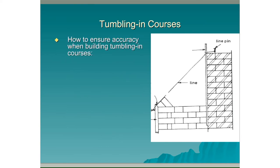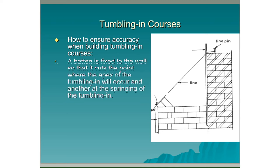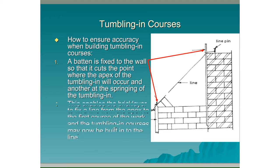How to ensure accuracy when building tumbling in courses: A batten is fixed to the wall so that it cuts the point where the apex of the tumbling in will occur and another at the springing of the tumbling in. This enables the brick layer to fix a line from the apex to the first course of the wall and the tumbling in courses may now be built to the line.